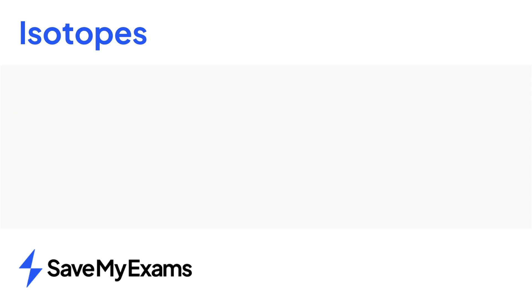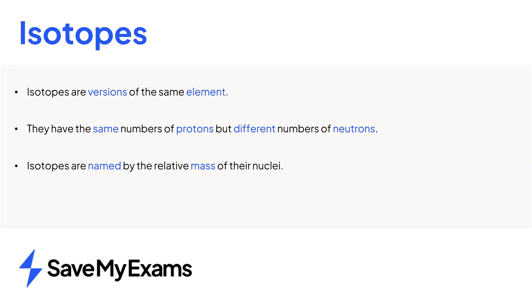This video explained that isotopes are different versions of an element which have different numbers of neutrons. We name isotopes by the relative mass of their nuclei and isotopes of the same element behave almost identically in chemical reactions thanks to having identical arrangements of charged particles.